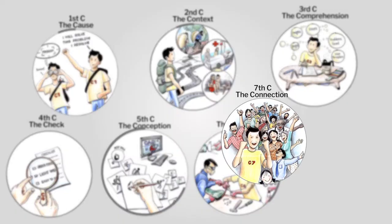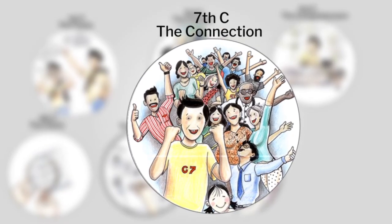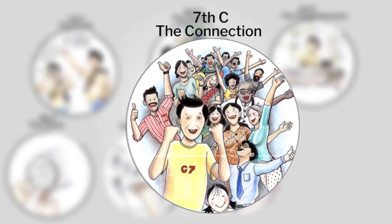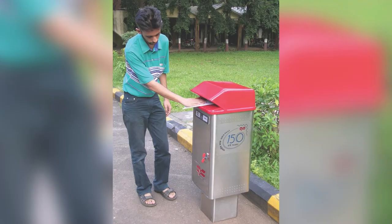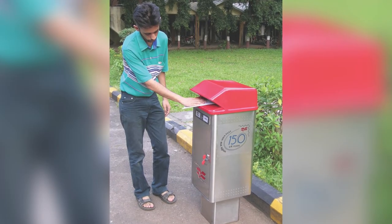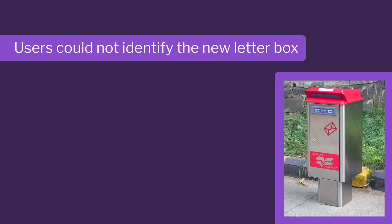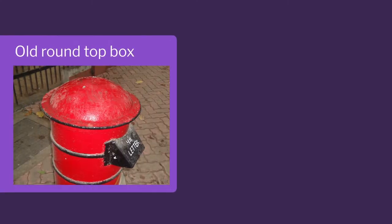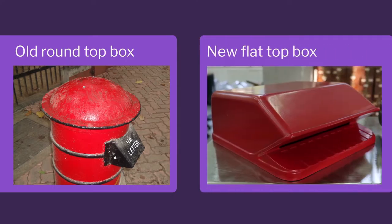As we discussed the seven C's, we came to the last C where we made a connection with the users. We manufactured 200 numbers and had this in the field, and we found out that a large number of users had this problem. So we went back to square one, back in the design process to see how we can redesign and take it forward.